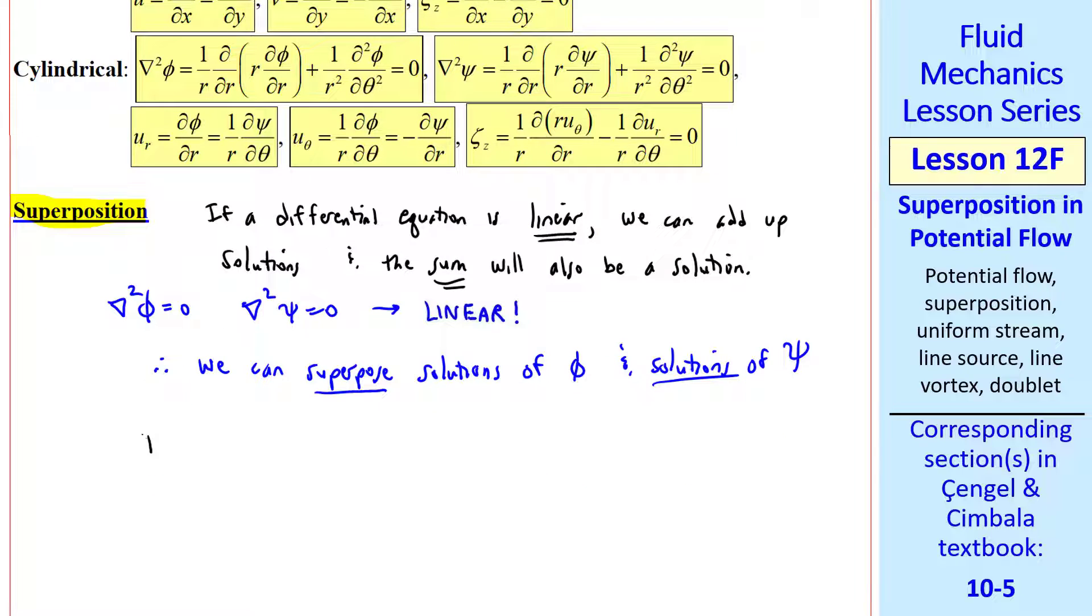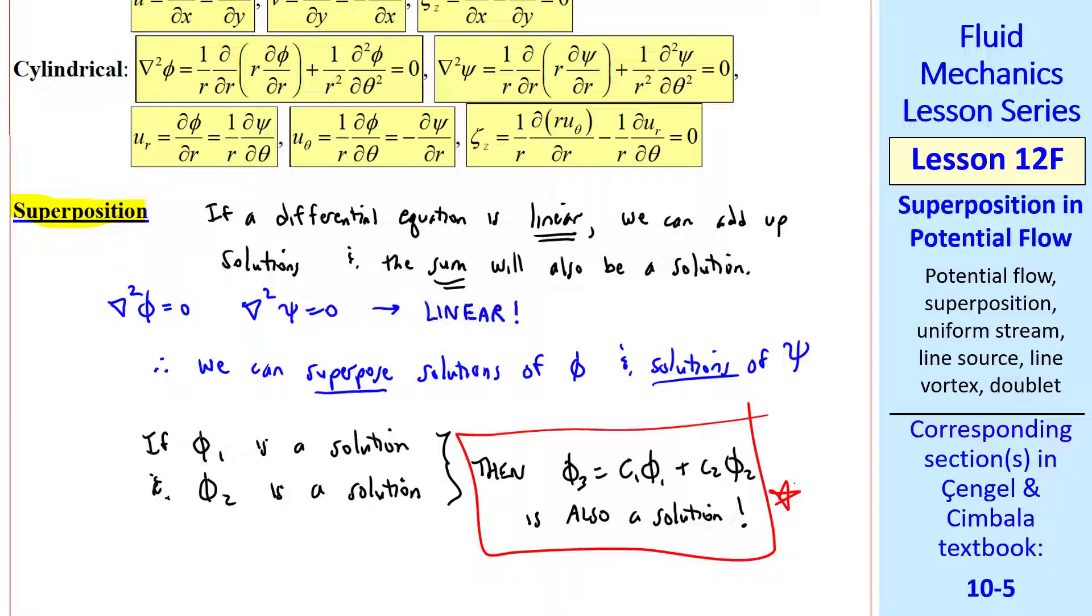Here's how it works. If phi1 is a solution, and phi2 is a solution, then phi3, which we define as c1 phi1 plus c2 phi2, where c1 and c2 are just constants, is also a solution. This is superposition.